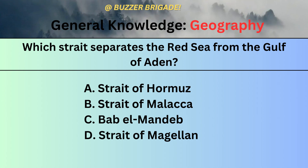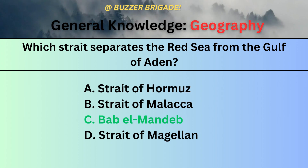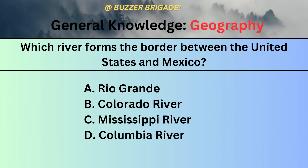The first question is: which Strait separates the Red Sea from the Gulf of Aden? It's the Strait of Bab-el-Mandeb. Which river forms a border between the United States of America and Mexico? It's the Rio Grande.